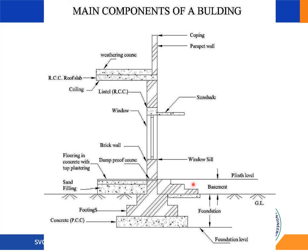The parapet wall is a low-height wall built along the edge of the roof, terrace, walkway, and balcony. Parapet walls can be constructed using different materials like reinforced cement concrete, steel, aluminium, and glass. It is usually considered as a single brick wall.